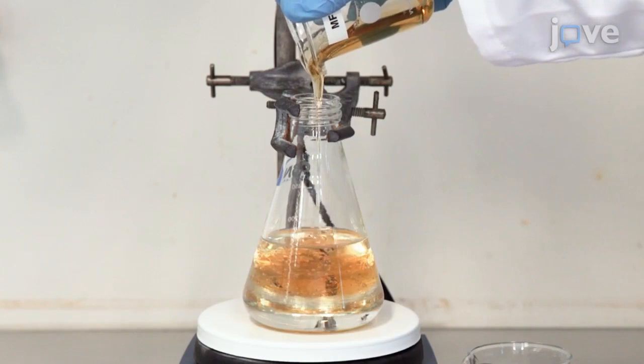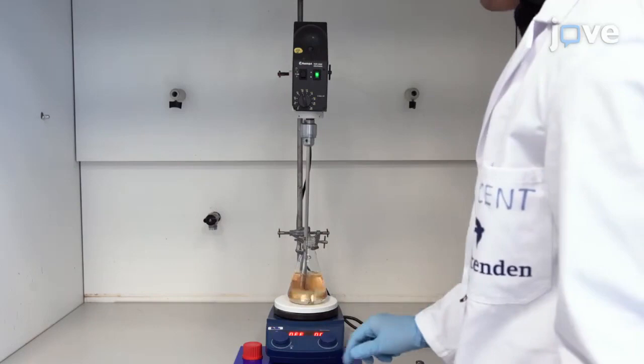Now stir the mixture at 200 rpm for 30 minutes at 50 degrees Celsius to ensure a homogeneous resin.